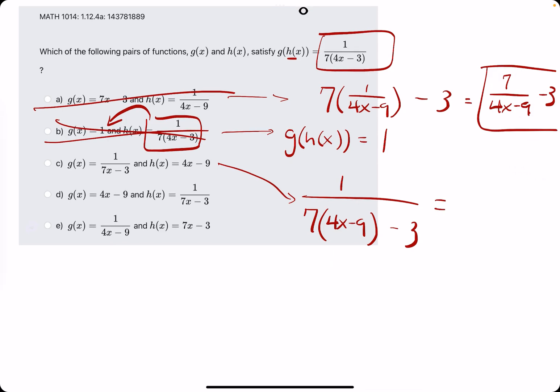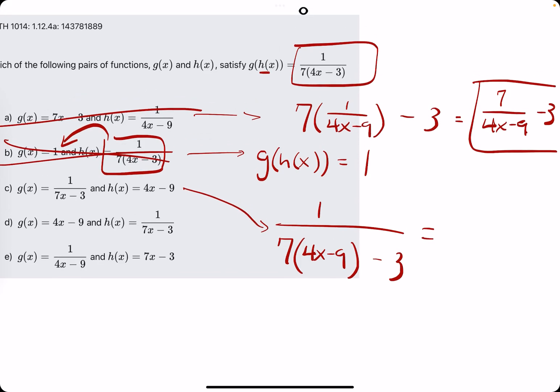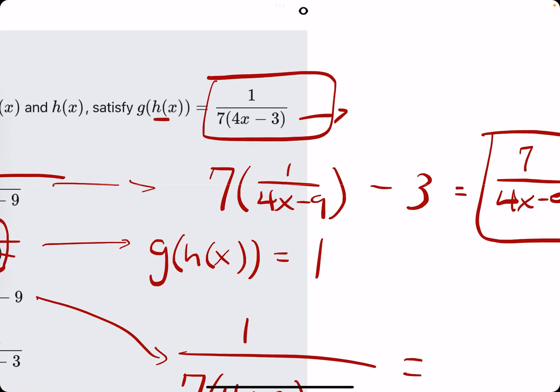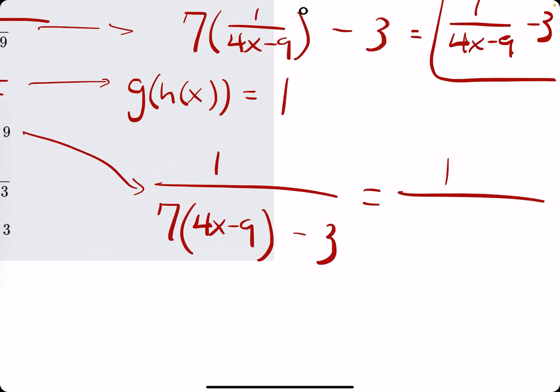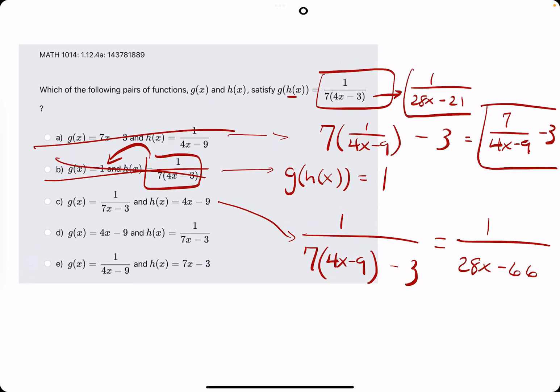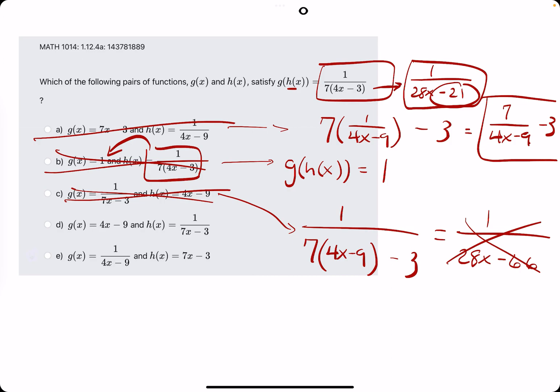Actually, let me go ahead and work it out. So multiplying the denominator out in the original one, we get 28x minus 21. 7 times 4 and then 7 times negative 3, right? So now let's expand this and see if the two denominators match. We get 28x minus 7 times 9 is 63. And then minus 3 on top of that gives us negative 66. So it's very close. We had the 28x, but the original one had negative 21. This has negative 66. So this also cannot work out.